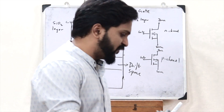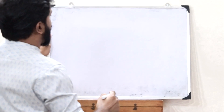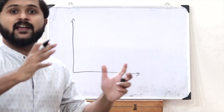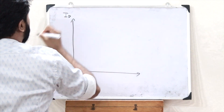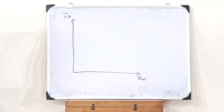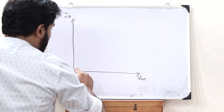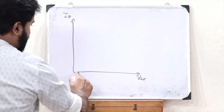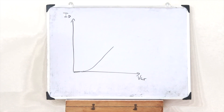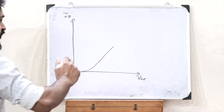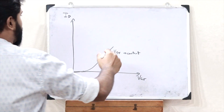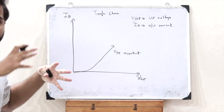Now let us plot the transfer characteristics of this power MOSFET. The transfer characteristic is plotted between the input voltage and the output current. The output current is the drain current ID, and the input voltage is VGS — the voltage across the gate and the source. As VGS is increased, at first the current doesn't increase, but after a certain threshold value, we see an increase in the curve. Here VDS, the voltage across the drain and the source, is kept constant.